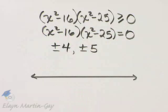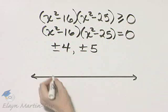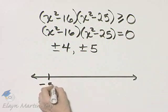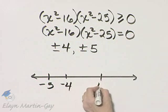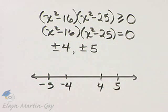And we write these solutions and these solutions only on a number line. And make sure you put them in numerical order. So here's negative 5, here's negative 4, somewhere over here is 4, and somewhere over here is 5.